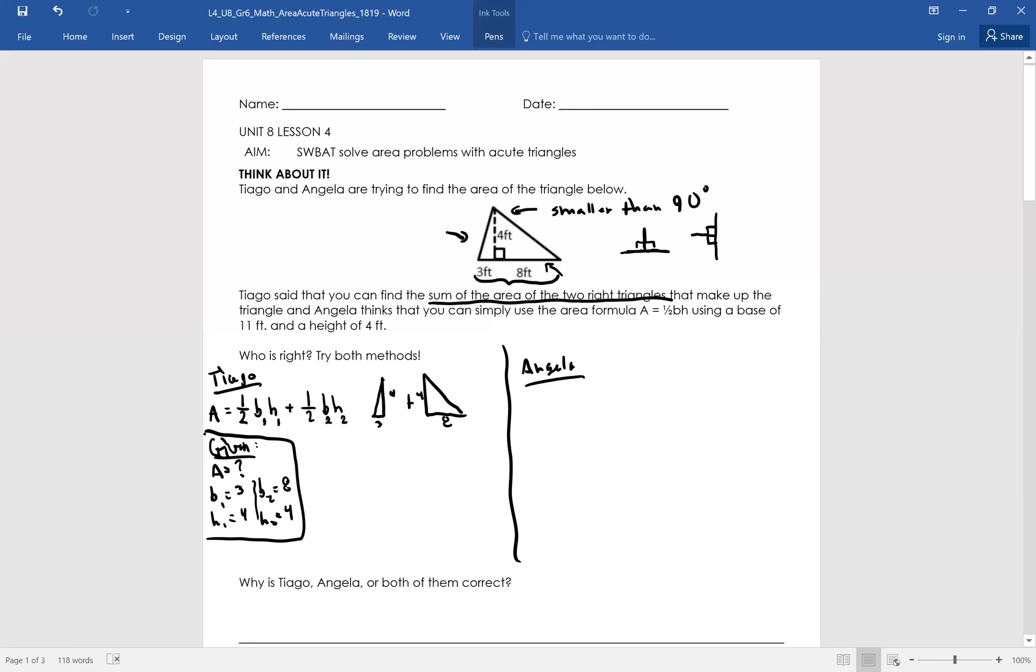Now I can use substitution to figure out what's happening here. And let's see who's right. So A equals one half. The base of the first triangle is three. The height is four plus one half. The base of the second one is eight. The height of the second one is four. Now I can just simplify one half times 12 plus one half times 32. What's half of 12? Six. What's half of 32? 16. So the area looks like it's going to be 22 feet squared.